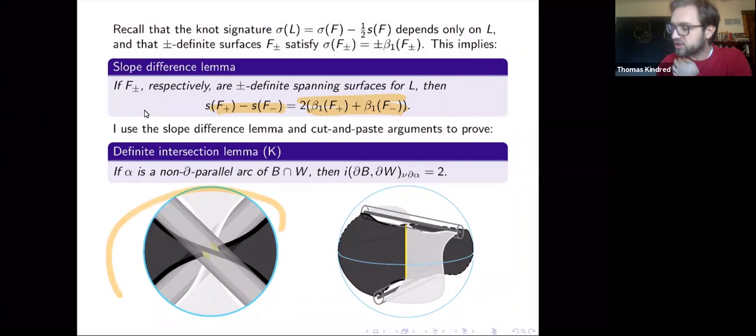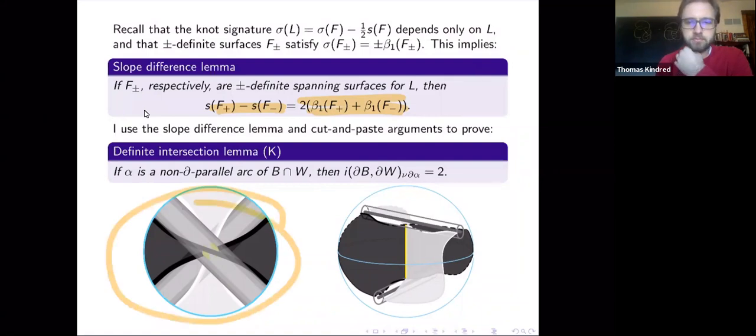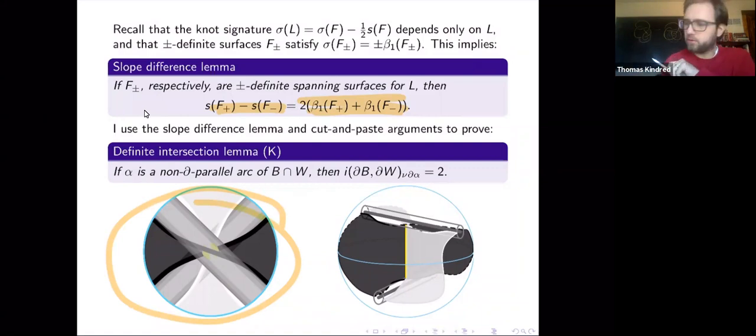We're going to be talking about positive and negative definite chessboard surfaces for the rest of the talk — there will be a black surface and a white surface. The convention is that the black surfaces are always positive and the white surfaces are always negative. In the geometric proof of the Flype theorem, there are a couple of lemmas about properties of definite surfaces. The first follows immediately from properties of the signature: if you have a pair of positive and negative definite surfaces, their slope difference is always equal to twice the sum of their Betti numbers. Furthermore, any arc where a positive and negative surface intersect — as long as it's not boundary-parallel — looks like a crossing.